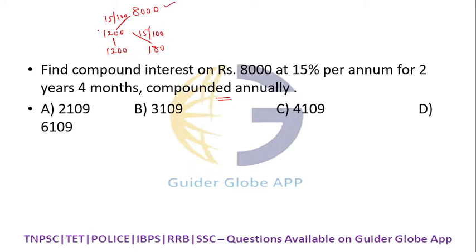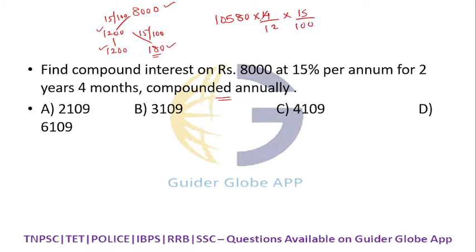8,000 + 1,200 + 1,200 = 10,400. Then 10,400 + 180 = 10,580. This is the amount after 2 years, that is principal plus compound interest. Now find the simple interest for the remaining 4 months at a rate of 15/100.